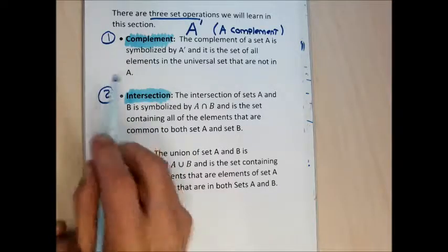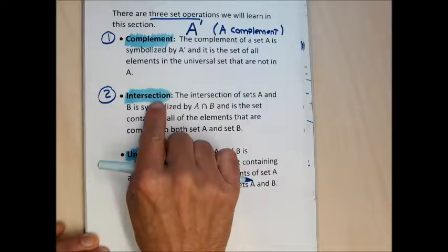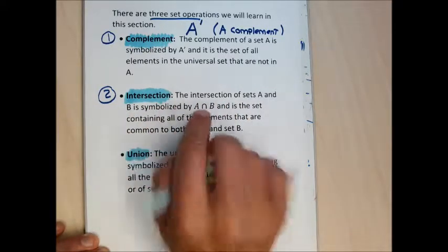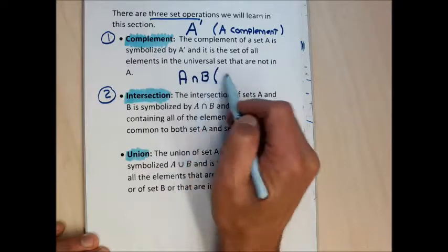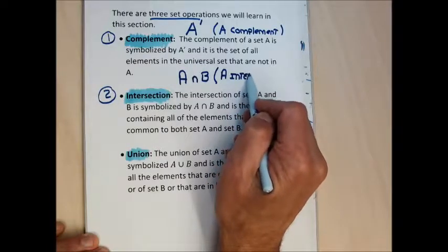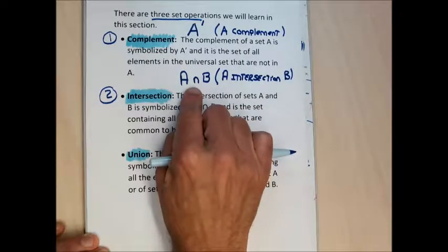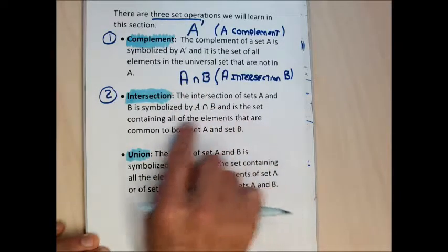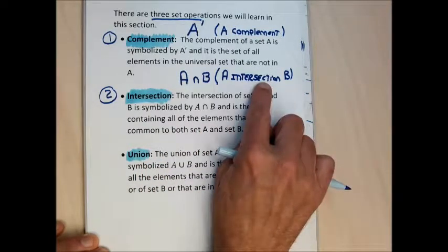The second of the three operations is intersection. Complement refers to just the complement of a single set, while intersection involves joining two sets together. The intersection of sets A and B is given by the upside-down U symbol. I would read this as 'A intersection B.' A intersection B is the set containing all the elements that are in common to both sets A and B — it's just what the sets have in common.